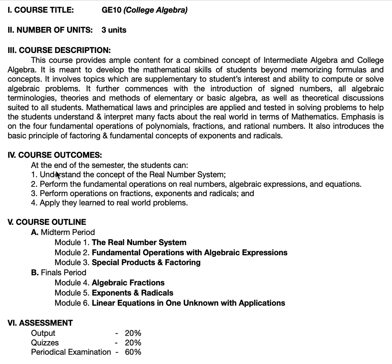What will be the overall course outcomes? At the end of the semester, you must be able to: one, understand the concept of the real number system; two, perform the fundamental operations on real numbers, algebraic expressions, and equations; three, perform operations on fractions, exponents, and radicals; and most importantly, four, apply what you've learned to real-world problems — such as investment problems, number problems, and disease problems — all of which are very important when you take the board exam.